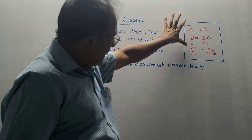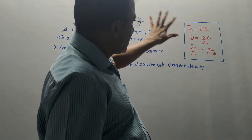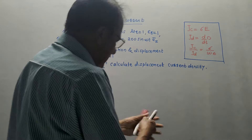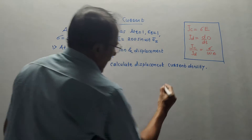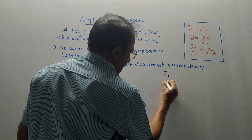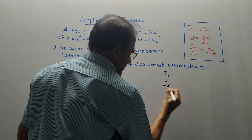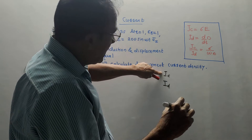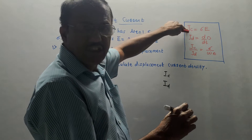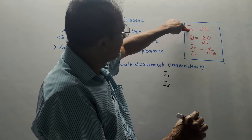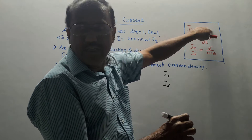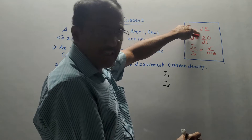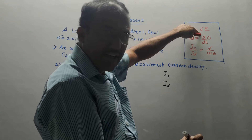We need only three formulae to solve such types of numericals. IC is conduction current. The density of conduction current IC is JC, which is given by sigma times E, where E is electric field intensity and sigma is conductivity.